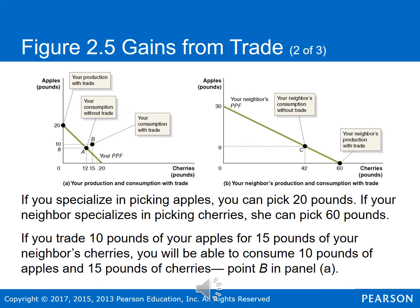Now let's see what happens when you and your neighbor specialize and then trade. If you specialize in picking apples, you can pick 20 apples and zero cherries. If your neighbor specializes in picking cherries, she can pick 60 pounds of cherries and zero apples. You both specialize and then trade — if you trade 10 pounds of your apples for 15 pounds of your neighbor's cherries, you'll be able to consume 10 pounds of apples and 15 pounds of cherries. That's point B in panel A — the figure on the left. Notice that 10 and 15 is outside of your production possibility frontier.